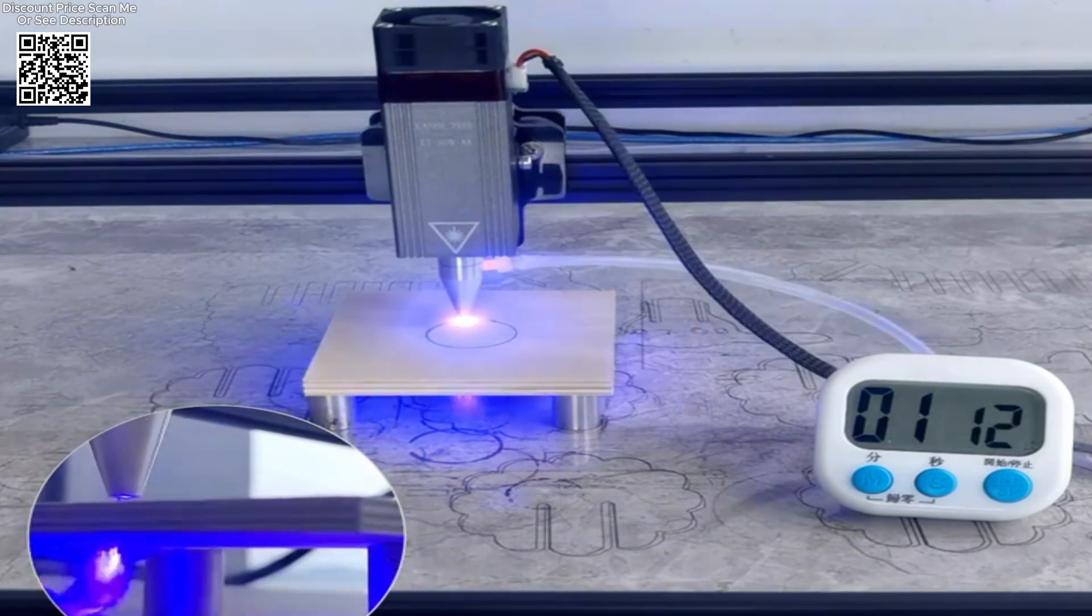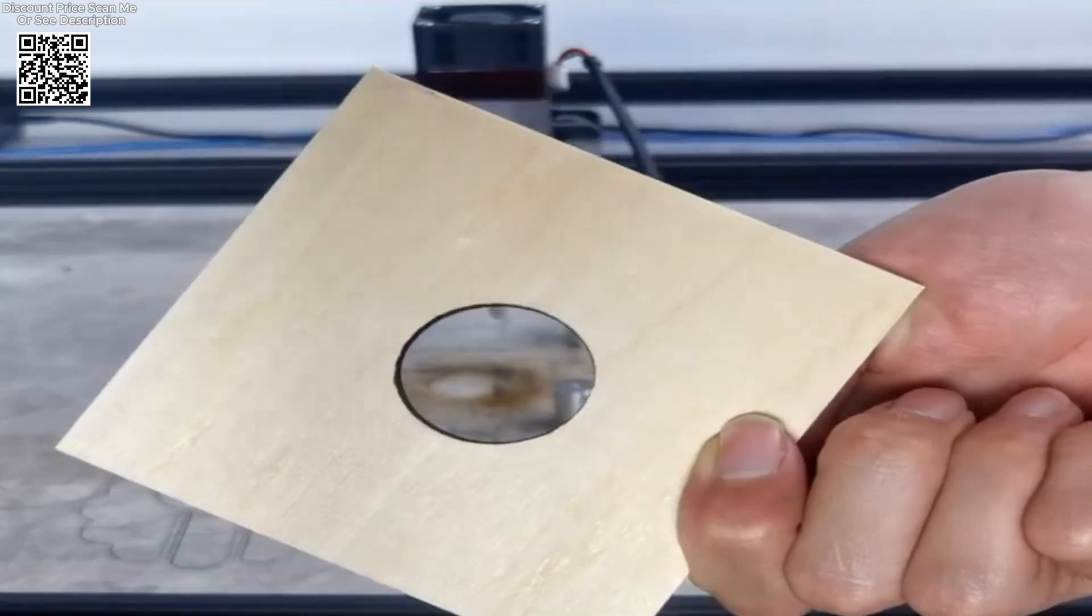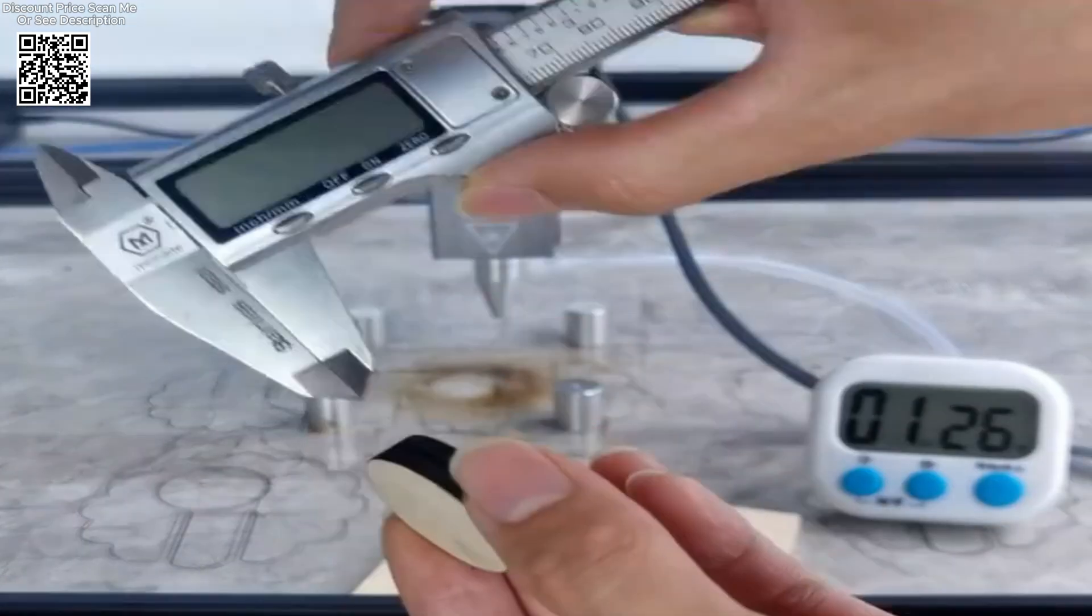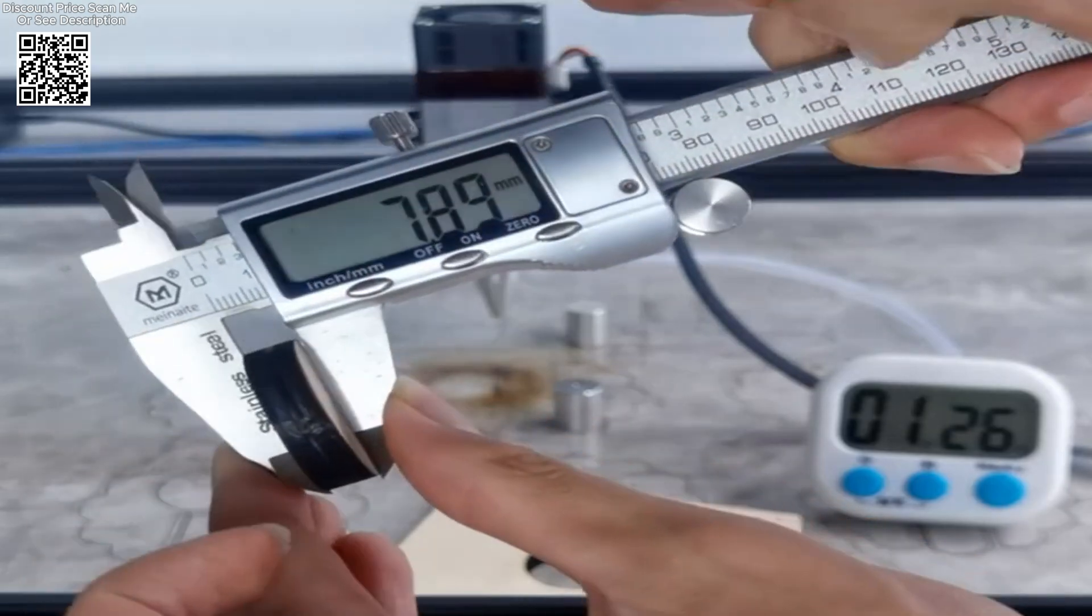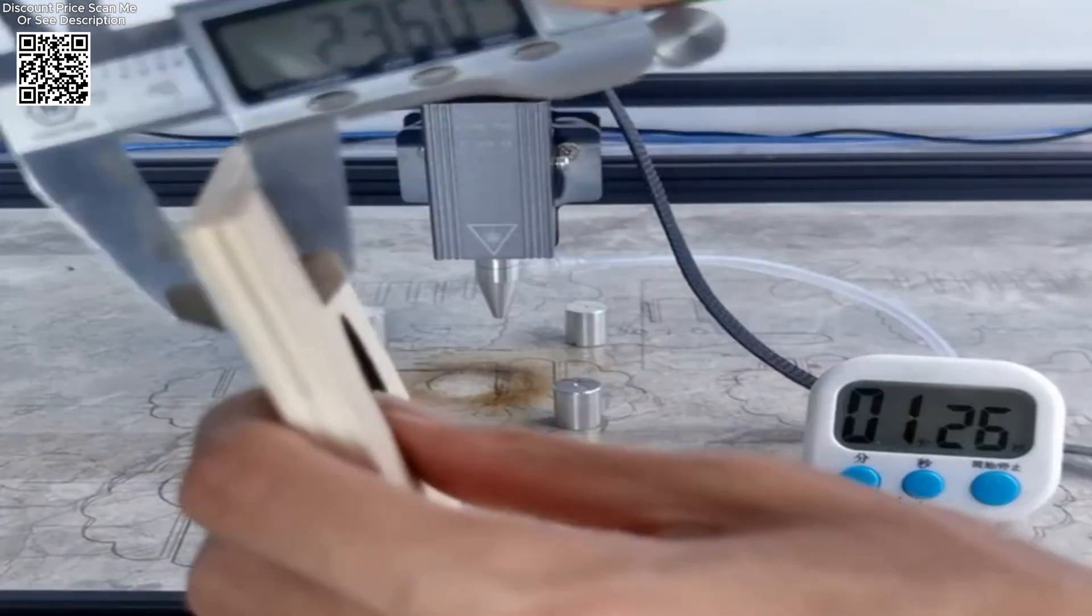The module is equipped with a high power 40W TTL laser head, capable of delivering precise and efficient cutting and engraving. This powerful output ensures that the module can handle a range of materials with high accuracy, making it a valuable tool for both professional and hobbyist use.